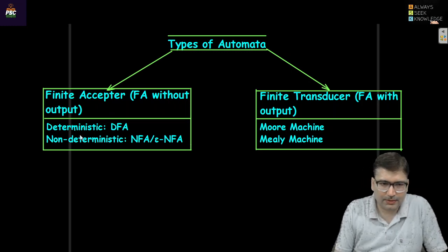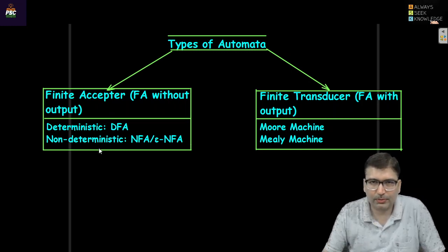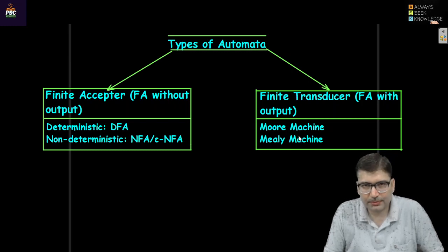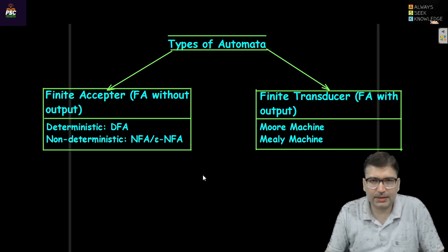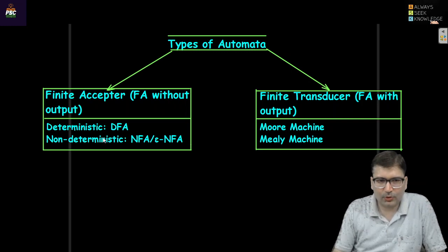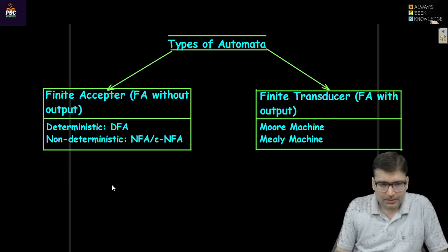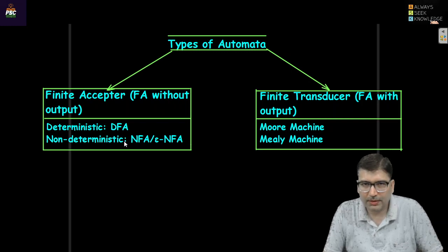There are two types of finite acceptors: deterministic and non-deterministic. There are also two types of transducers: Mealy machine and Moore machine. In this lecture, I am going to cover the deterministic and non-deterministic finite automaton. So what is deterministic and what is non-deterministic behavior of a machine?